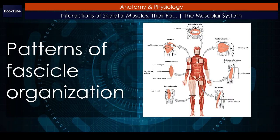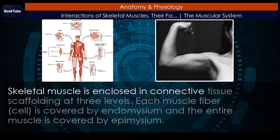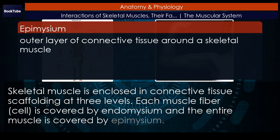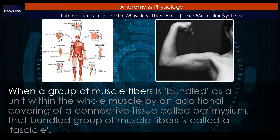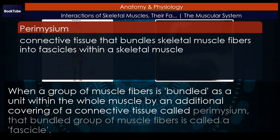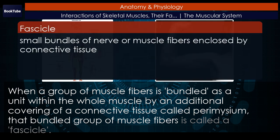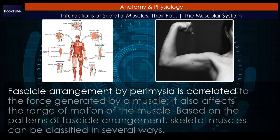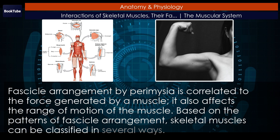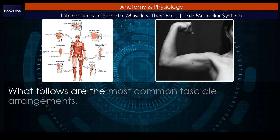Patterns of fascicle organization: Skeletal muscle is enclosed in connective tissue scaffolding at three levels. Each muscle fiber cell is covered by endomysium and the entire muscle is covered by epimysium. When a group of muscle fibers is bundled as a unit within the whole muscle by an additional covering of connective tissue called perimysium, that bundled group of muscle fibers is called a fascicle. Fascicle arrangement is correlated to the force generated by a muscle and also affects the range of motion. Based on the patterns of fascicle arrangement, skeletal muscles can be classified in several ways.